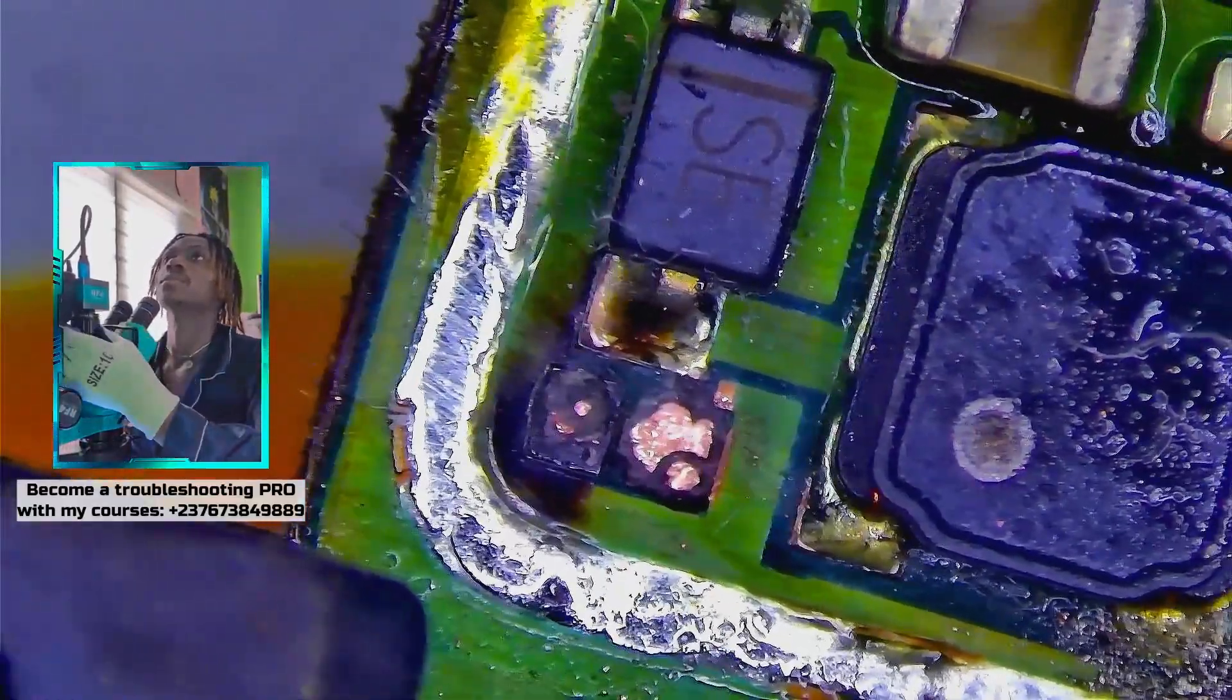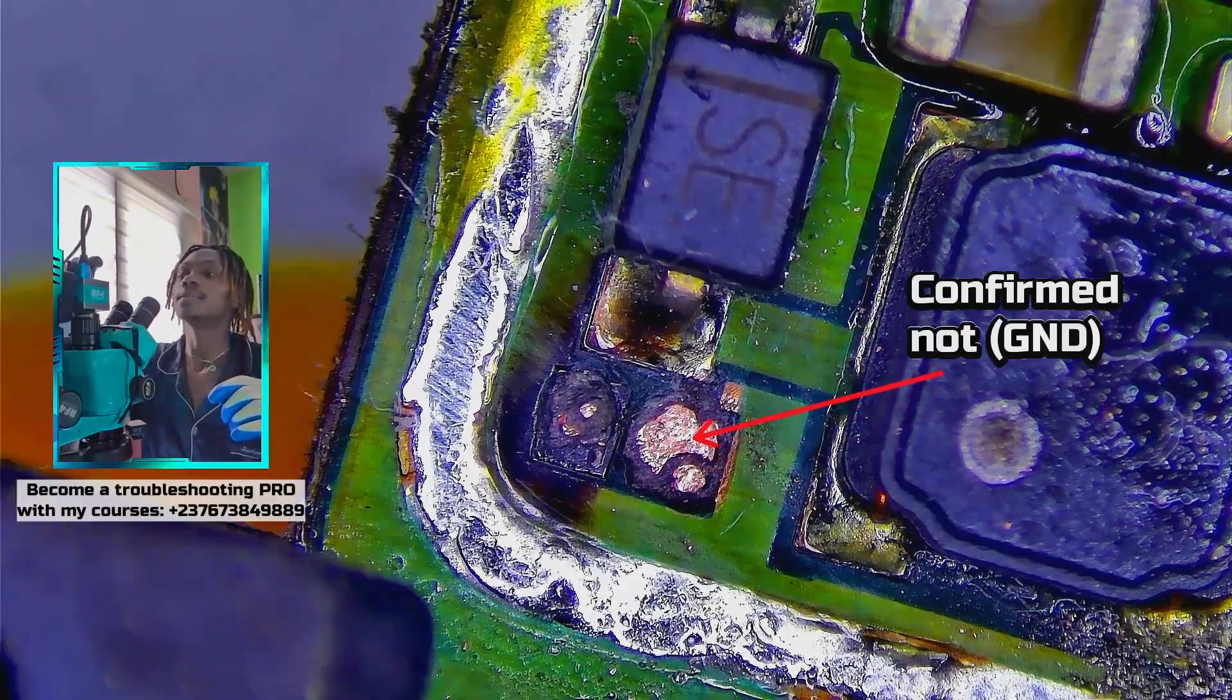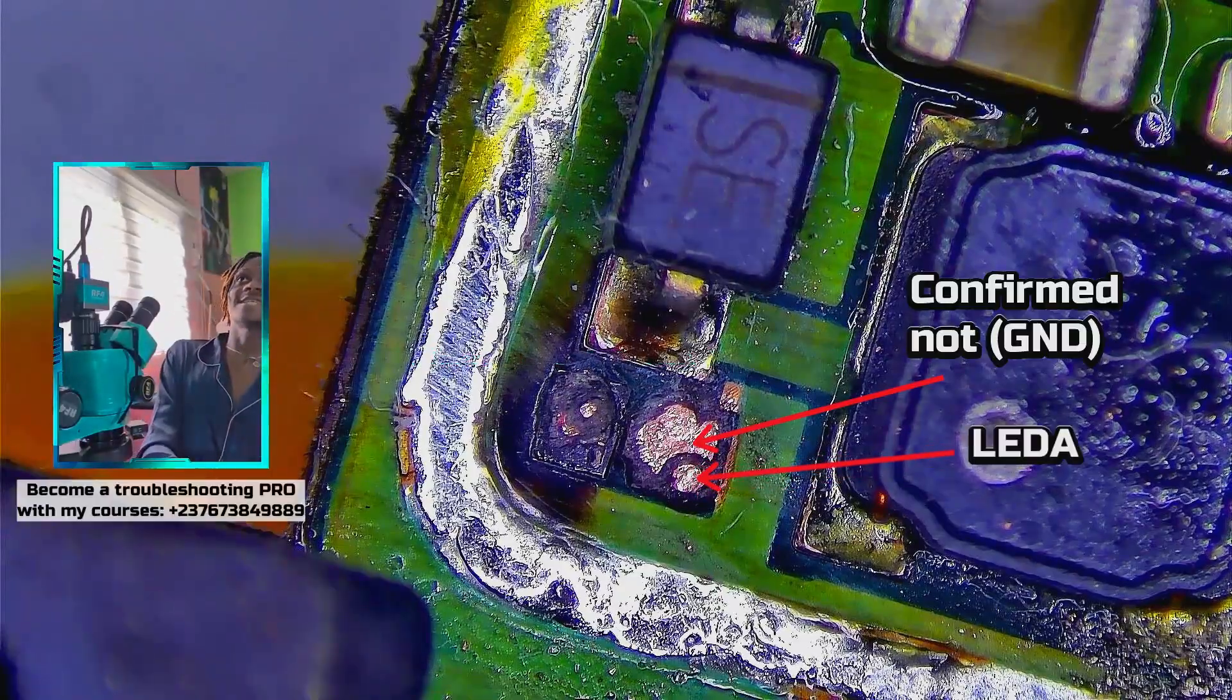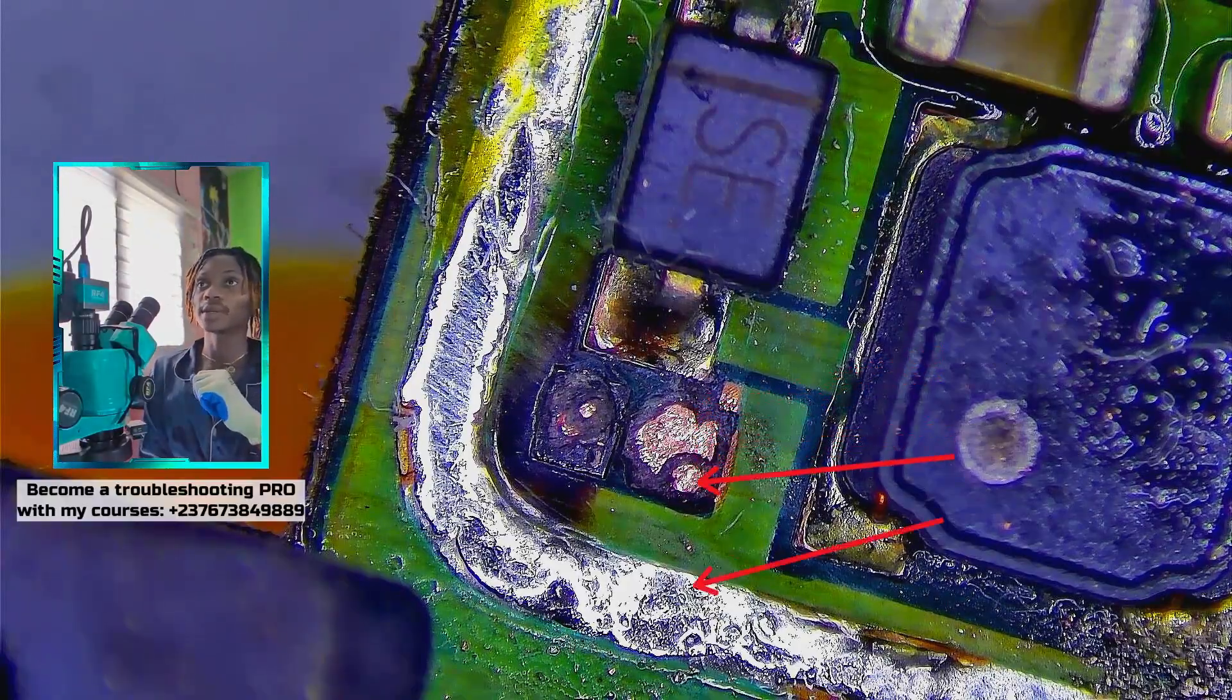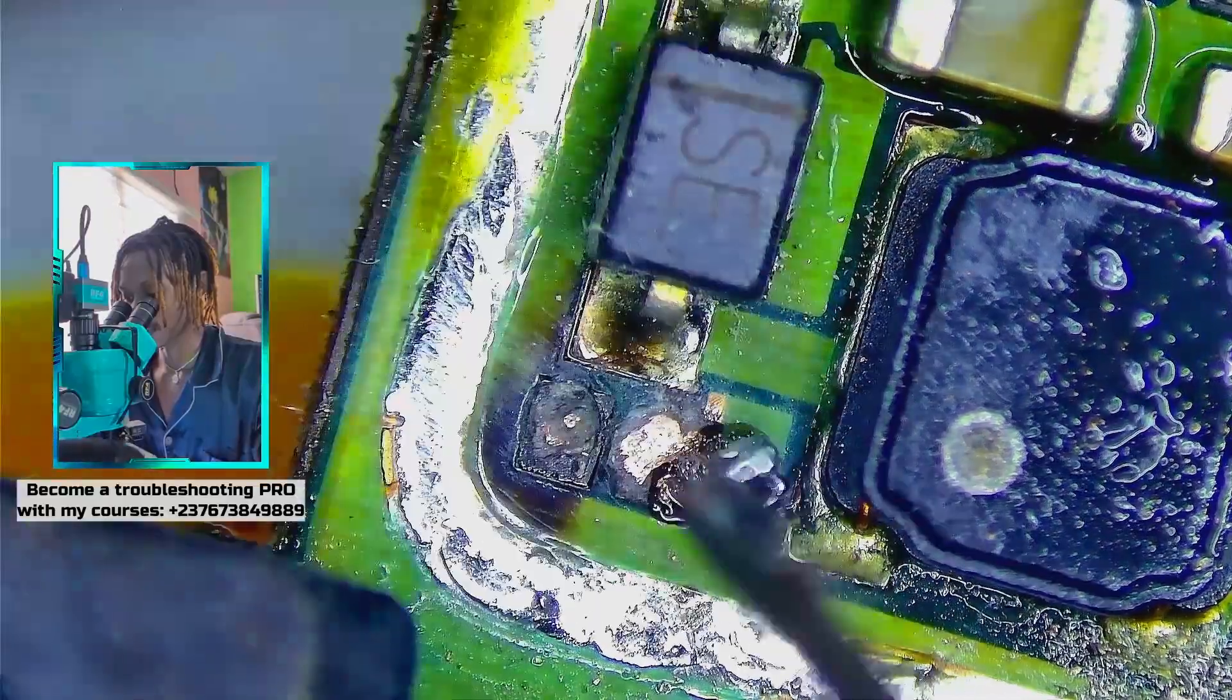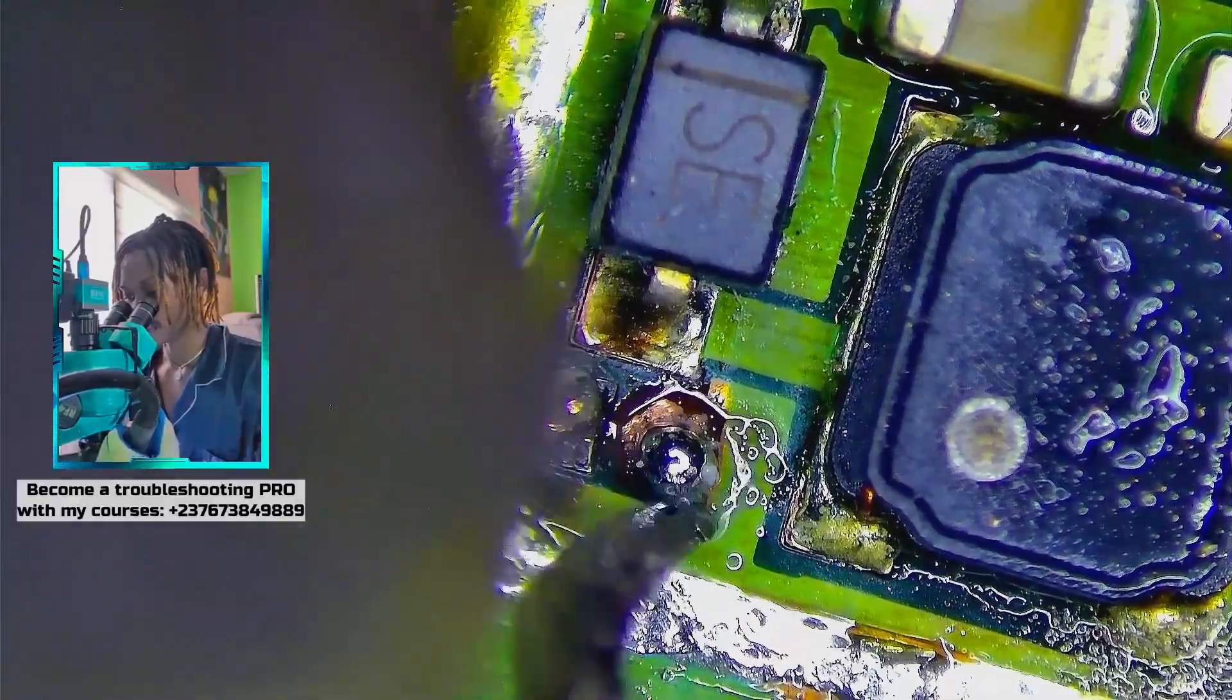As you can see, everything looks clear right here. When you want to do this type of jumper, inner layer jumper, you confirm any line you found. I tested that line to confirm it wasn't the ground, and I confirmed the other one is the LED line. The other one I confirmed that was the ground wasn't connected to any part, so I had to do this, just like that, very smooth.